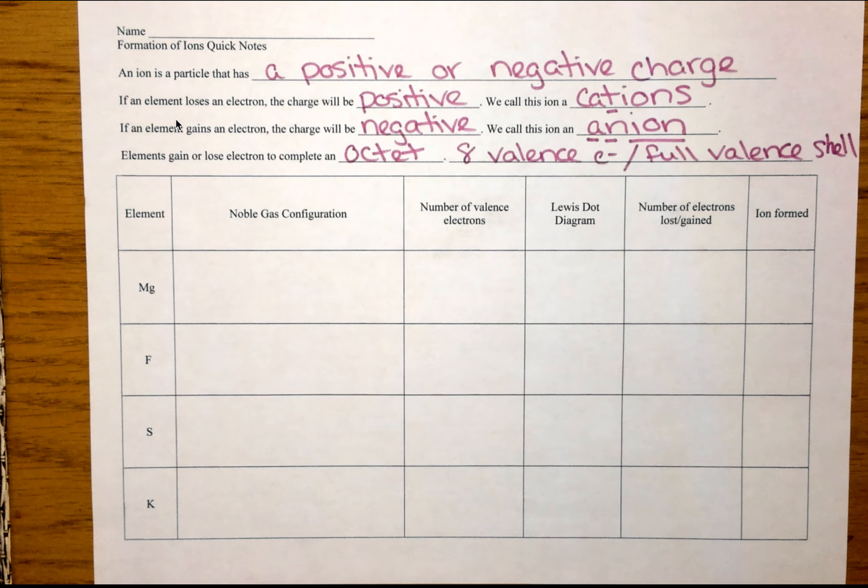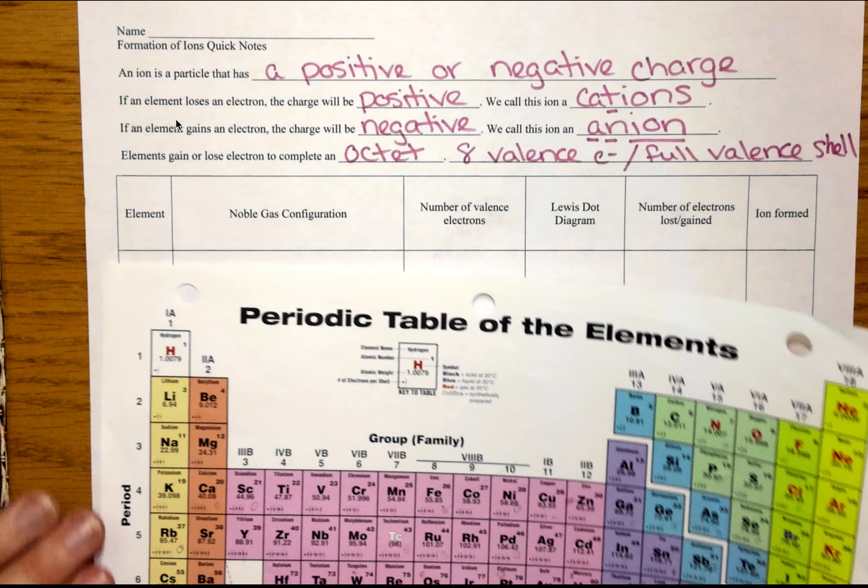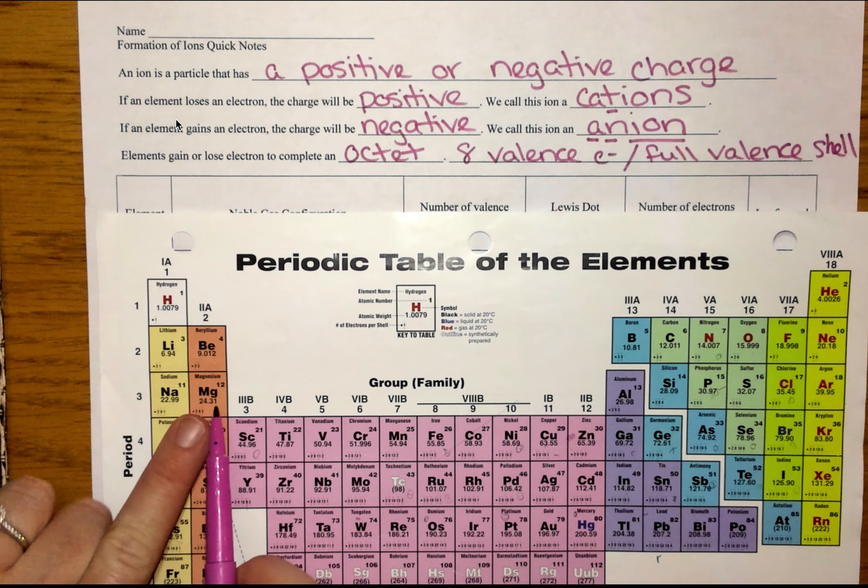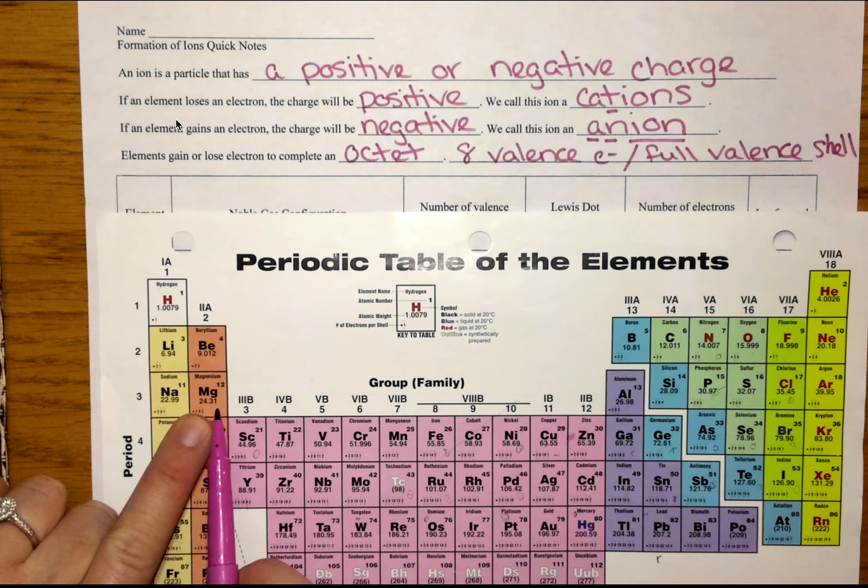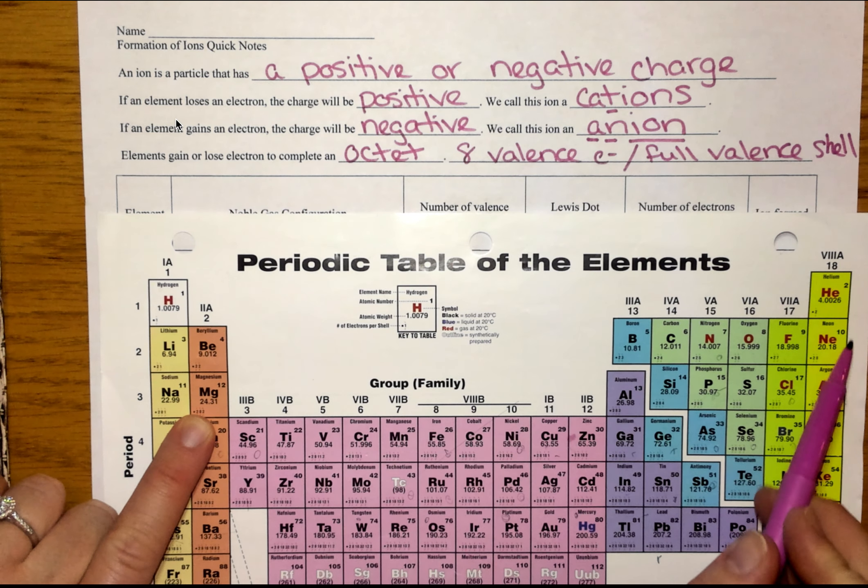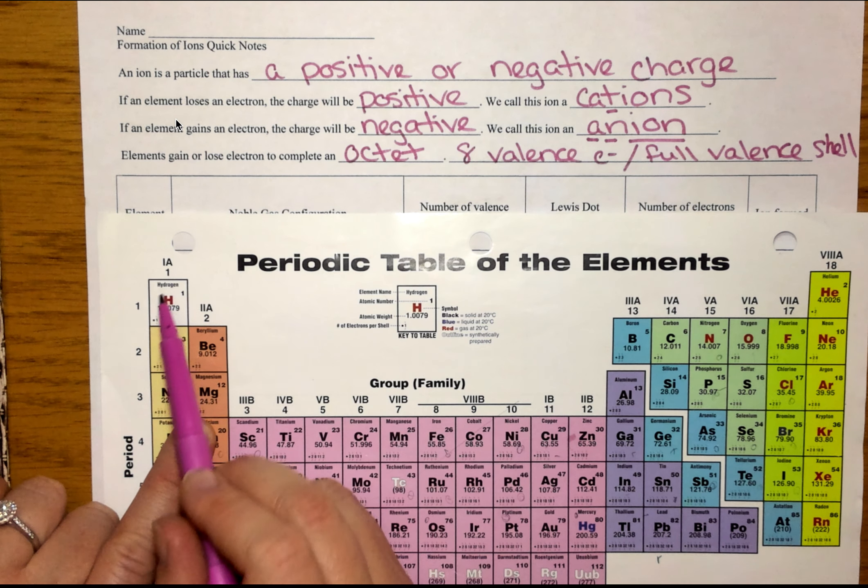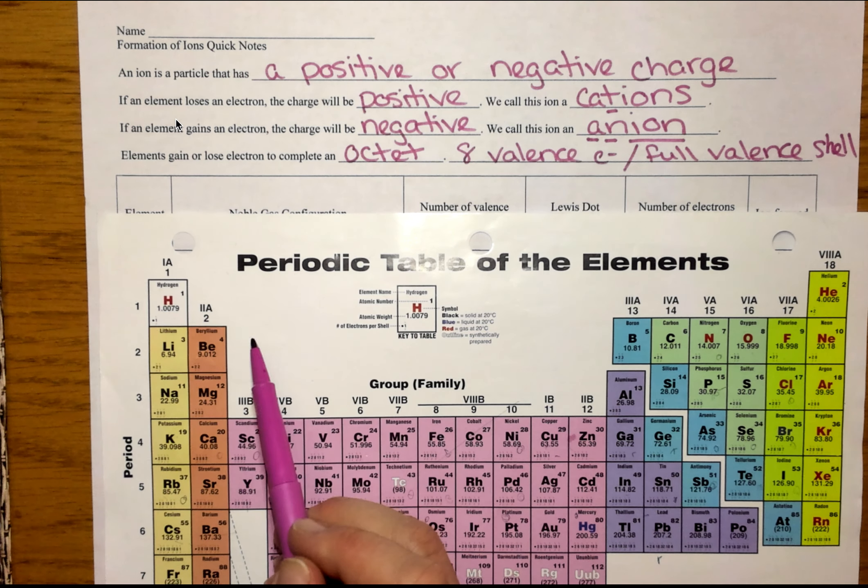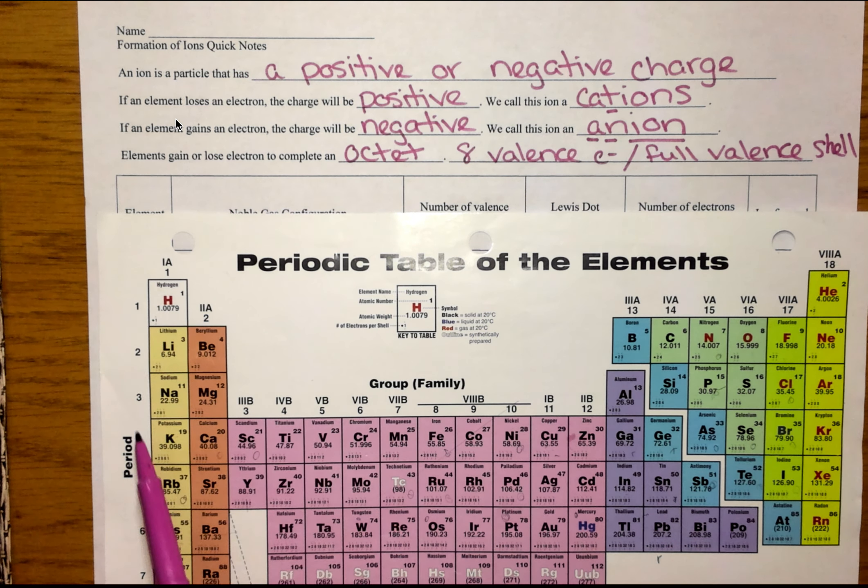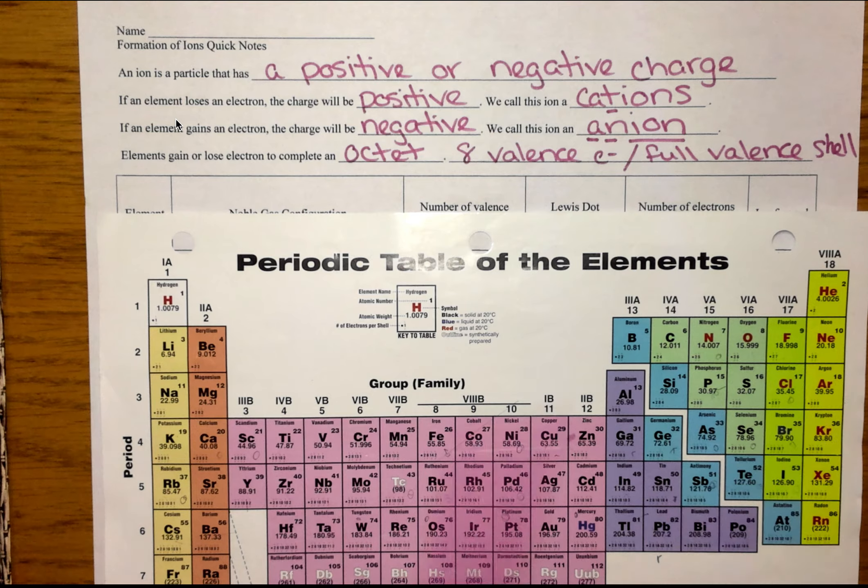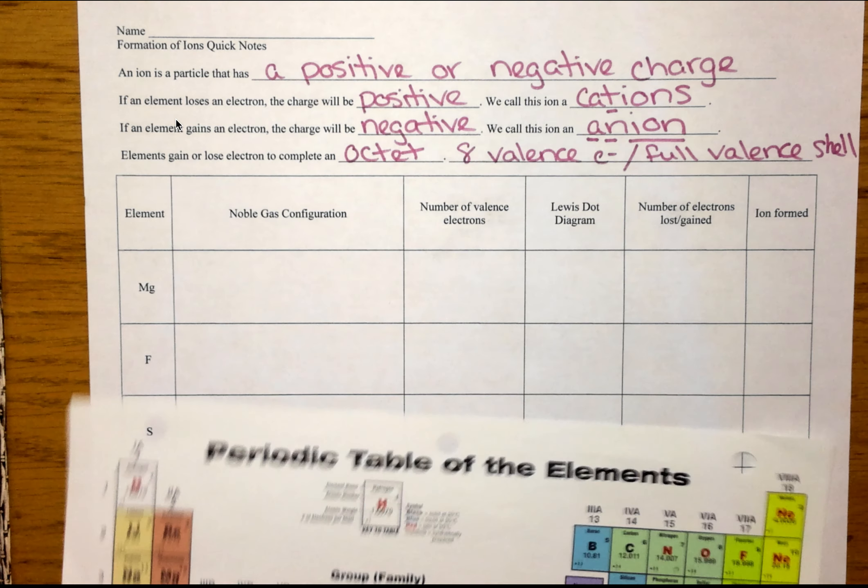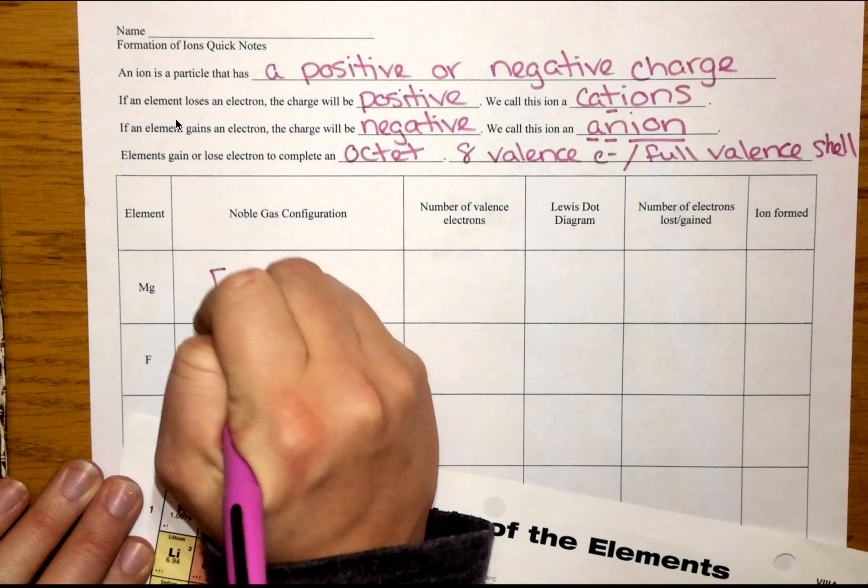Now, let's do it out for a few different examples. Let's look at magnesium. If I wanted to write the noble gas configuration for magnesium, remember, we're going to go up a row and all the way over. So I'm at neon is the noble gas and I'm going to write in brackets. And then I go down to my third row of my S block and I count over one, two. So the noble gas configuration for magnesium is neon 3S2.